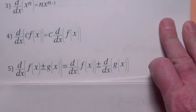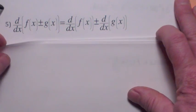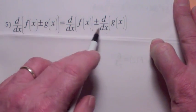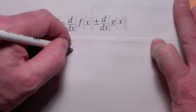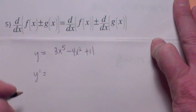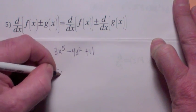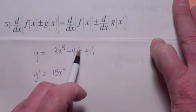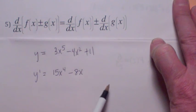The derivative of a sum of two functions: you differentiate each one. Again, that looks a lot like our limit laws, because derivatives are a special type of limit. When you differentiate a sum, you differentiate each term — same with subtraction. So if y equals 3x to the 5th minus 4x squared plus 11, the derivative of the first term is 15x to the 4th, the derivative of the second term is minus 8x to the 1st, and the derivative of 11 is 0.